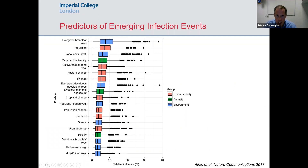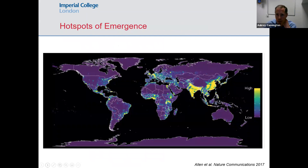People have tried to look at the factors that predict emergence of infection, and you can apply these predictors to the globe to identify hotspots. There won't be much surprise seeing hotspots in West Africa, India, and Southeast Asia. The hotspots appearing in Europe are partly explained by reporting — identification of emergence counts too. The UK probably isn't a hotspot for generating new emerging infections, but it might be a place where there's more chance of them being recognized.